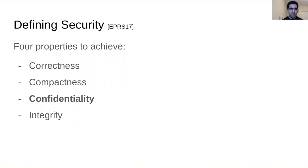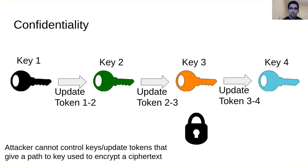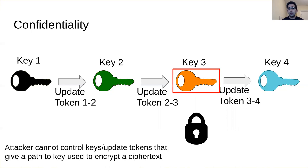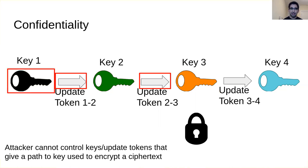I want to give you a sense — through pictures — of what security we can hope to achieve and what is out of the question. From standard encryption we know that if the attacker has access to the key itself, we cannot hope for any security. In the updatable encryption setting, if the attacker has keys or update tokens that form a path to the key used to encrypt a ciphertext, we also can't get security. For example, if the attacker has key 1 plus update tokens to key 2 and then to key 3, we can't expect to hide the data.